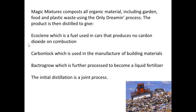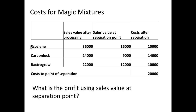Magic Mixtures produces an organic material using their own distillation process, and they distil their product to produce Eco-Clean for cars, Carbon Watt for building materials, and Back to Growth, which becomes a liquid fertiliser. The initial distillation of their organic material is the joint process. We have costs for Magic Mixtures including the sales value after processing, the sales value at the separation point, and costs after separation. We're going to start by calculating the profit using the sales value at the separation point.